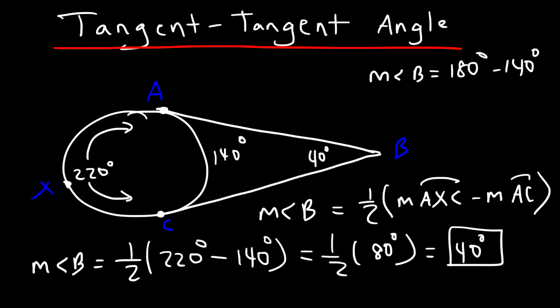The first theorem is a lot easier to get angle B. Make sure you realize that these two angles are supplementary — they must add up to 180 when dealing with a tangent-tangent angle.